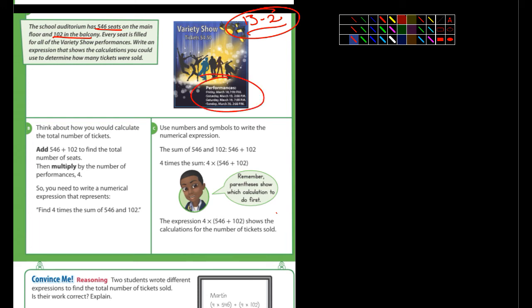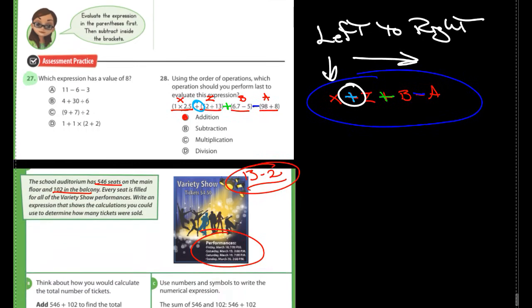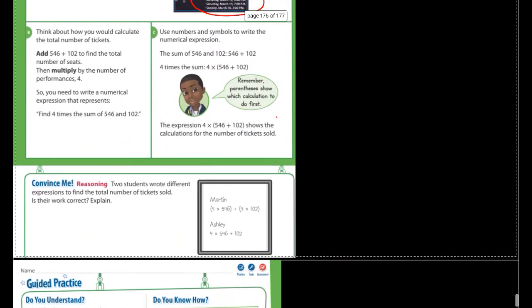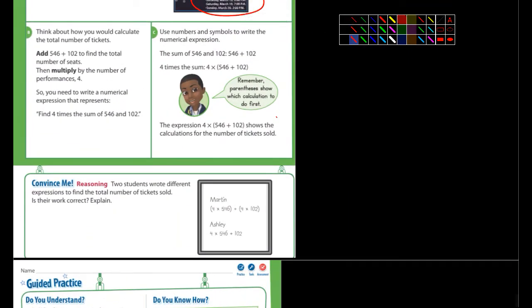But how many performances were there? And so if you look carefully, you can see that there's, looks like a Friday, Saturday, looks like two Saturdays and a Sunday, so four performances. So you might be inclined to just simply write, as somebody did down below here, what they do here, Ashley, four times 546 plus 102. That's obviously not going to work.